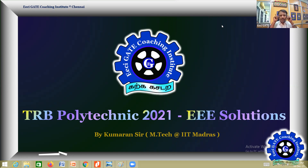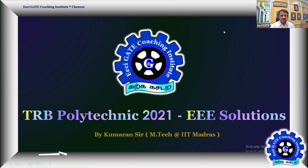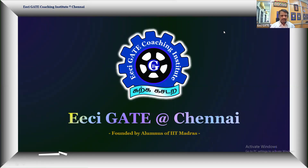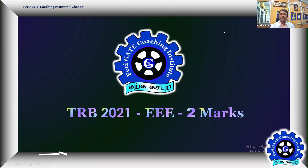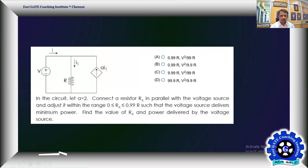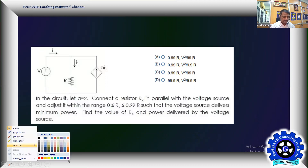Welcome back to Easy Gates TRB Polytechnic — TRIBLY 2021 solutions. We'll go ahead with the next problem. We are doing problems from the electrical paper for two marks. The next two-mark problem is from electric circuits.